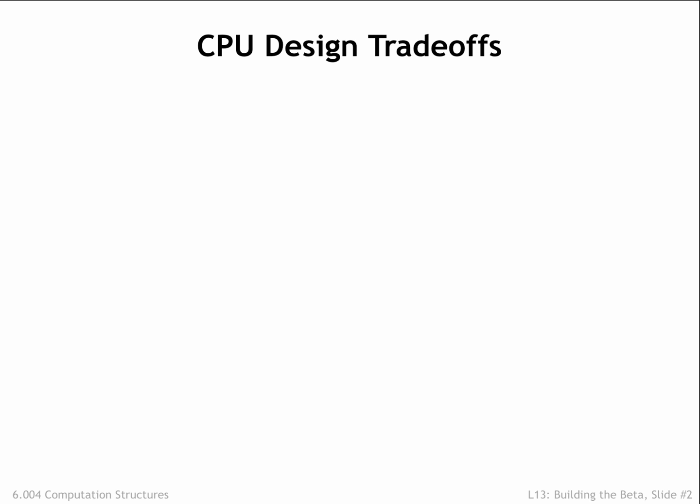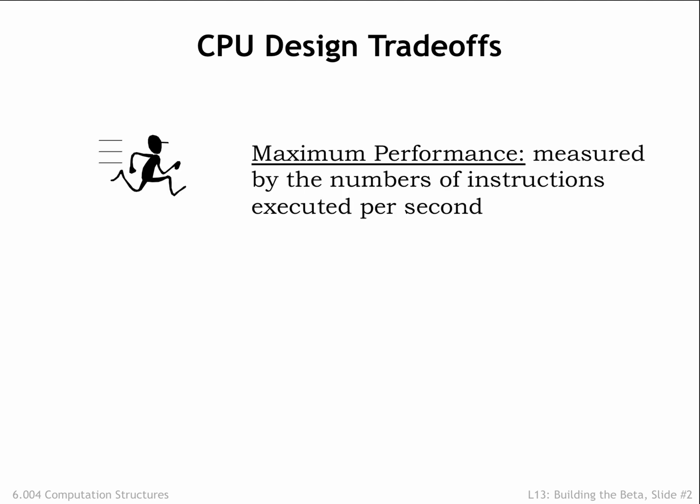Before tackling a design task, it's useful to understand the goals for the design. Functionality, of course — in our case, the correct execution of instructions from the beta instruction set architecture. But there are other goals we should think about. An obvious goal is to maximize performance, as measured by the number of instructions executed per second. This is usually expressed in MIPS, an acronym for millions of instructions per second.